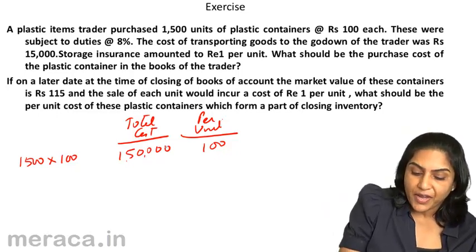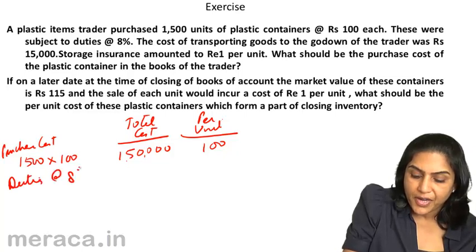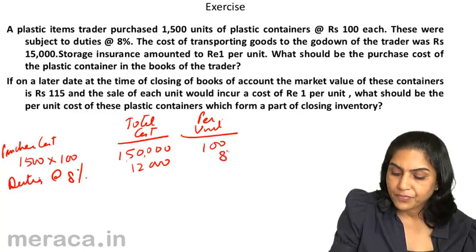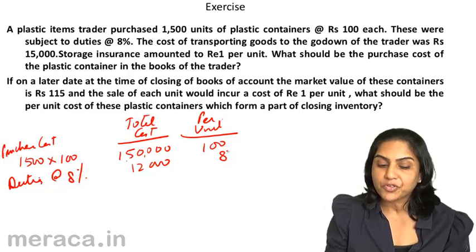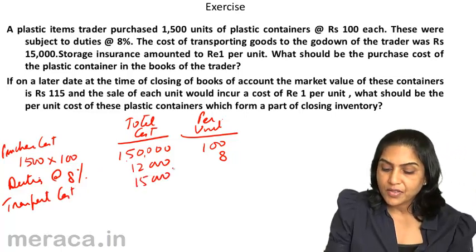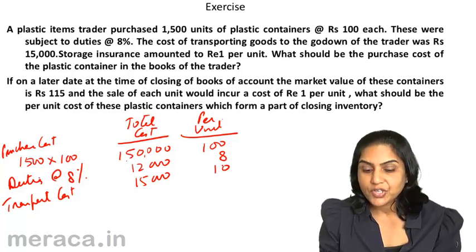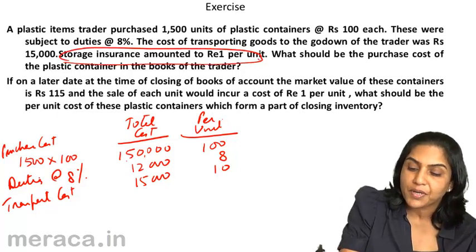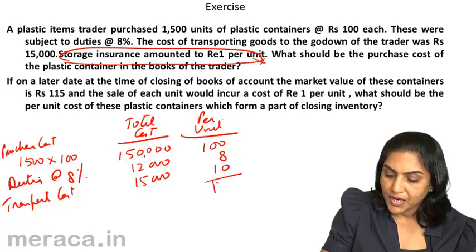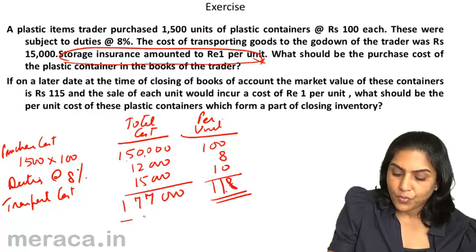These were subject to duties at the rate of 8%. The purchase cost is 1,500 units at rupees 100 each — per unit cost rupees 100, total cost rupees 1,50,000. Duties at 8% would be rupees 12,000. The cost of transporting goods to the godown was rupees 15,000 — these are transport costs, rupees 15,000, giving a cost per unit of rupees 10. Storage insurance of rupee 1 per unit would not be a part of the purchase cost. Therefore, purchase cost of the containers would be rupees 118 per unit, total cost rupees 1,77,000.